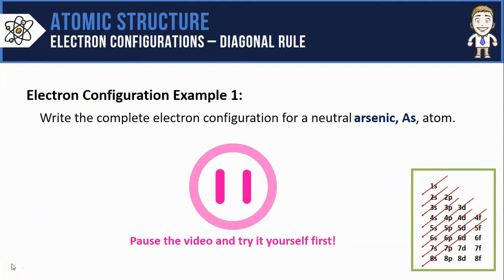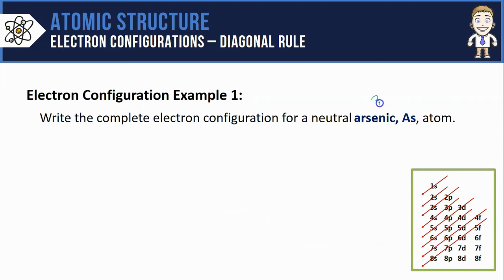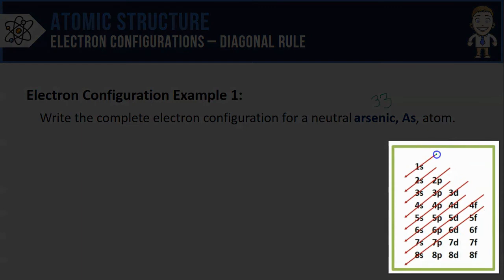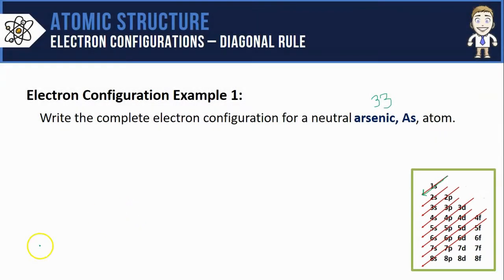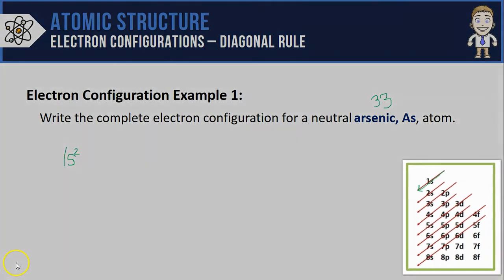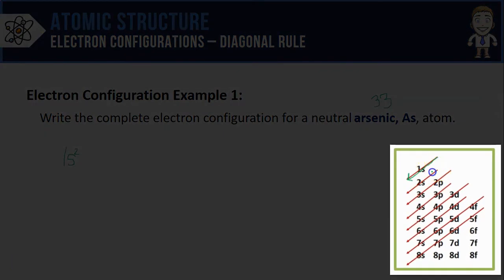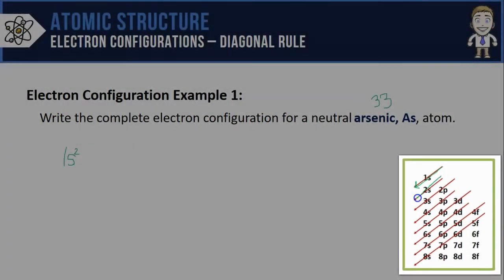So I've got 33 electrons to assign into orbitals. Following my arrows top to bottom gives me the proper order. First orbital I add to is the 1s, and since the s orbitals can hold two electrons max, I put a superscript of 2 after the 1s. My next arrow tells me to fill electrons into the 2s, so I know to write 2s².